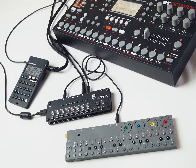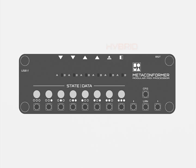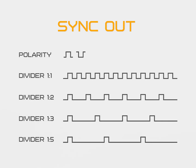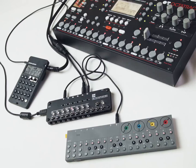Metaconformer is a MIDI processor that also works as a MIDI throughbox. It has two merging MIDI inputs and four MIDI outputs. The fourth output is hybrid and can be configured as a sync output with a configurable divider and polarity. TRS connectors are equipped with a type A-B switch, so Metaconformer is equally easy to use with any MIDI-equipped instruments. This switch can also act as a hardware MIDI out on/off switch.